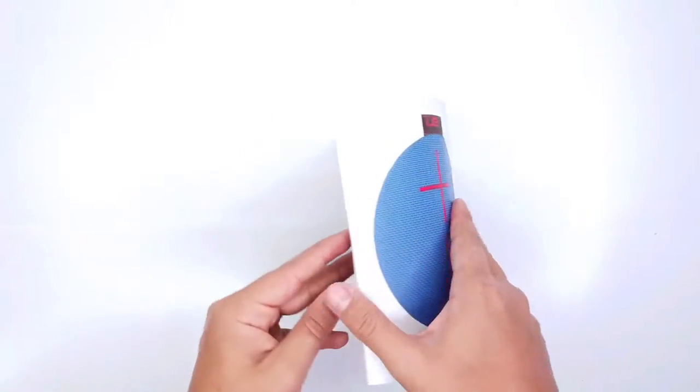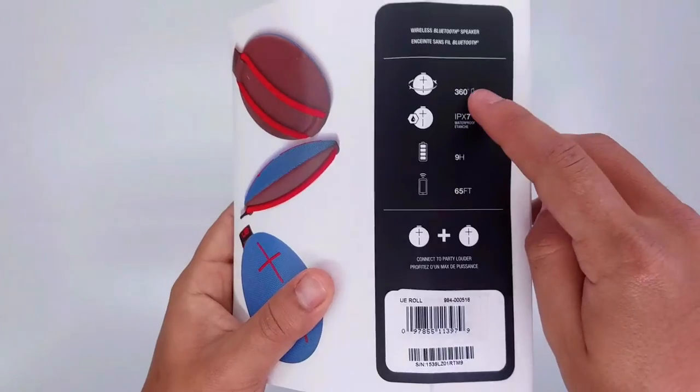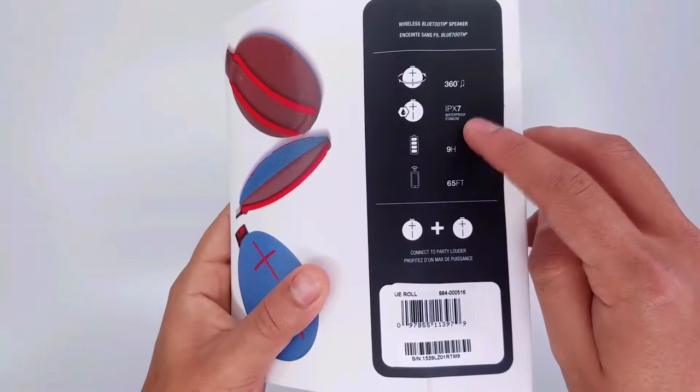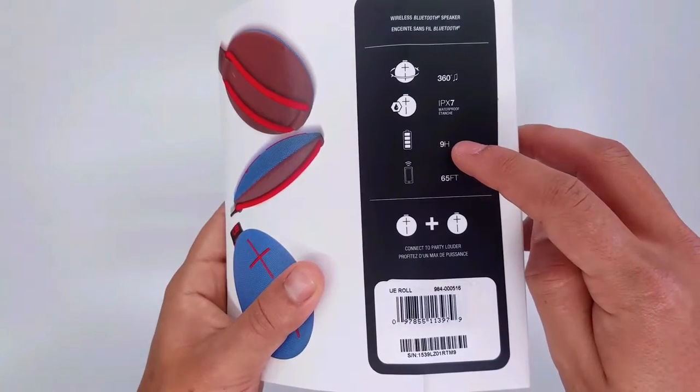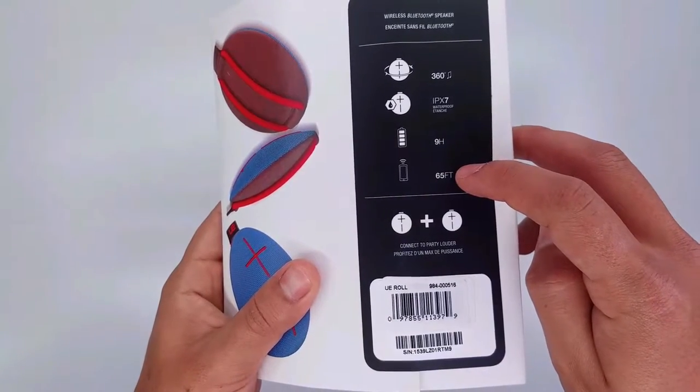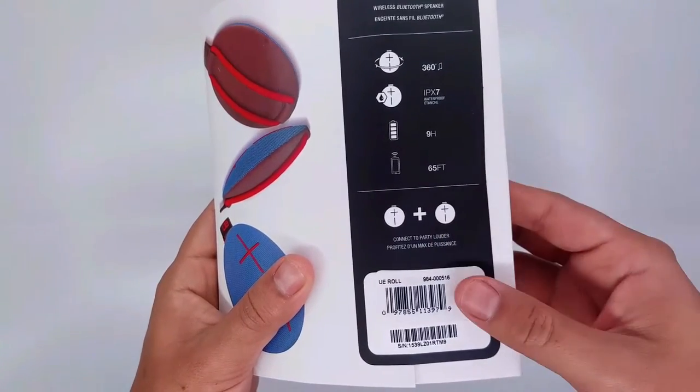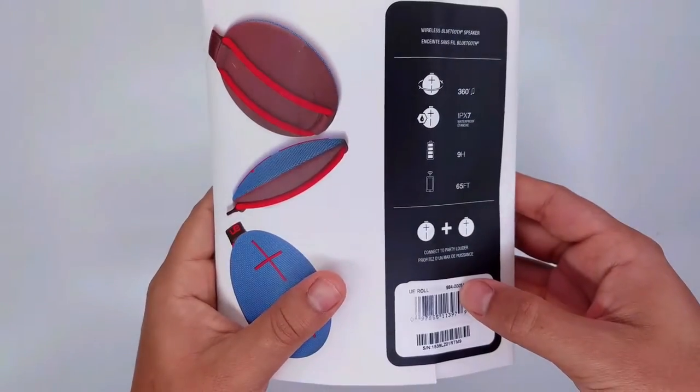On the back we have some specifications: 360 degree sound, IPX7 waterproof, 9 hours of battery life and 65 feet of range. You can also pair two of these devices to get stereo sound when you're listening to your music.